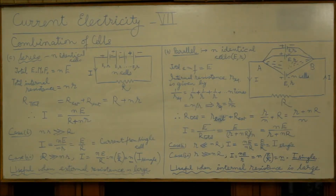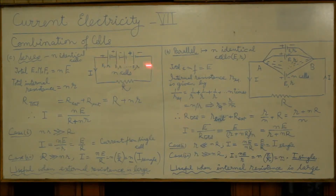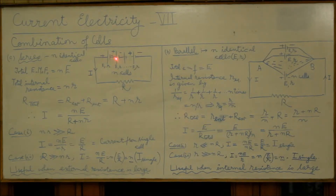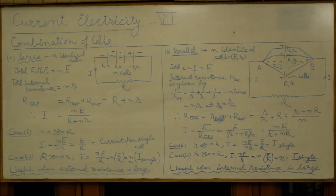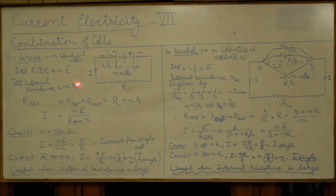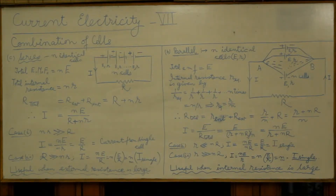For simplicity we will consider identical cells. These cells are said to be joined in series if they are joined end-to-end — that is, negative of first connected to positive of the second, negative of second to positive of third, and so on. Such a combination is called a series combination, and like a series combination of resistors, there is only one path for flow of current, and the same amount of current will flow through all the cells.